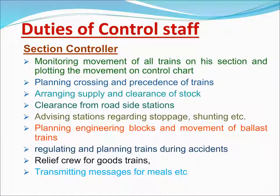The Section Controller monitors the movement of all trains on their section and plots the movement on the control chart. Plans crossings and precedence of trains. Arranges supply and clearance of stock from roadside stations. Advises stations regarding stoppages, shunting, etc. Plans engineering blocks and movement of ballast trains. Regulates and plans trains during accidents. Arranges relief crew for goods trains. Transmits messages for meals, etc.